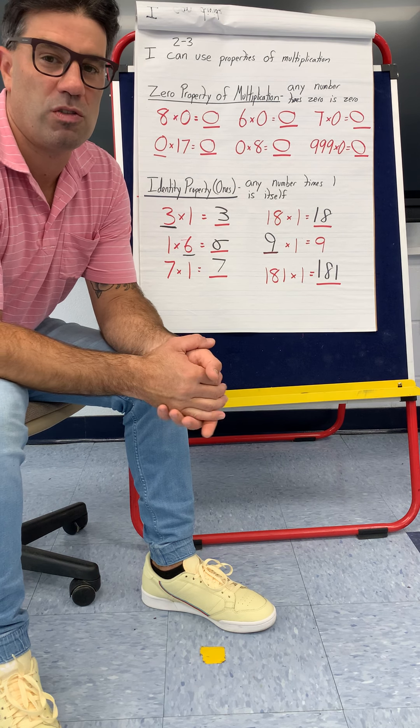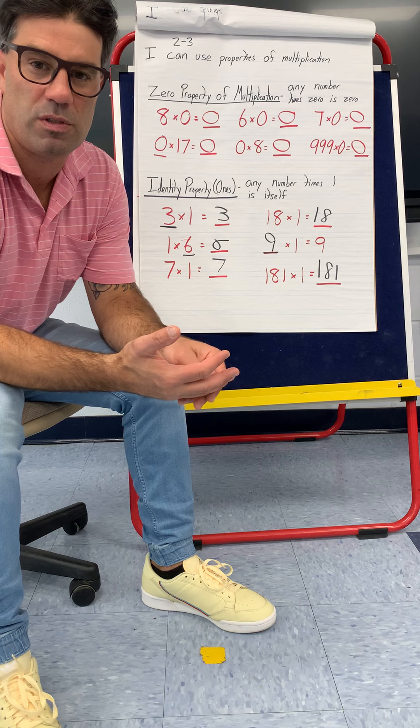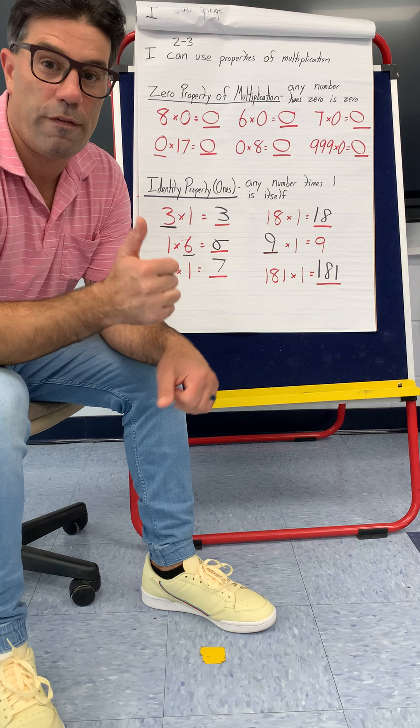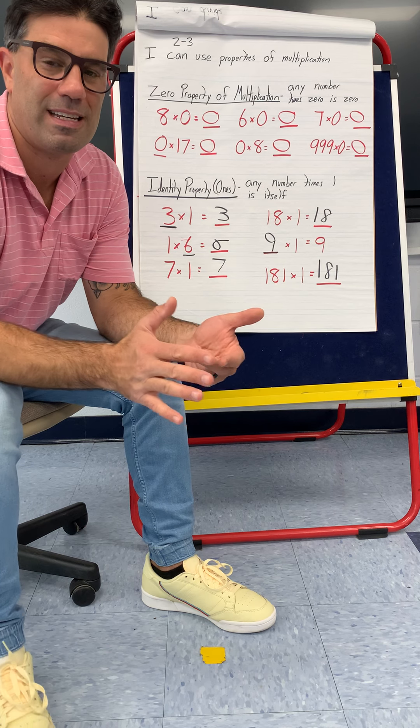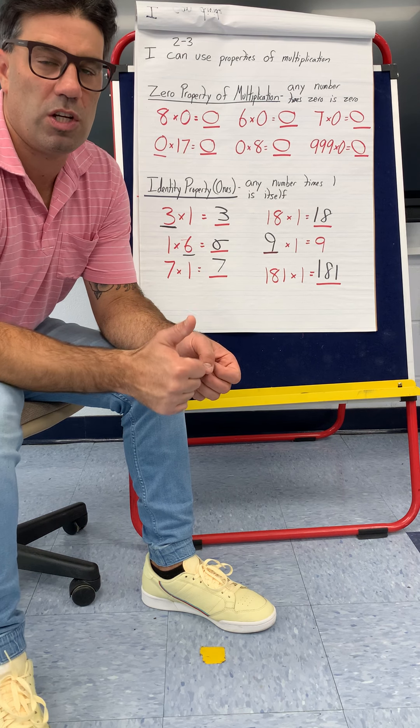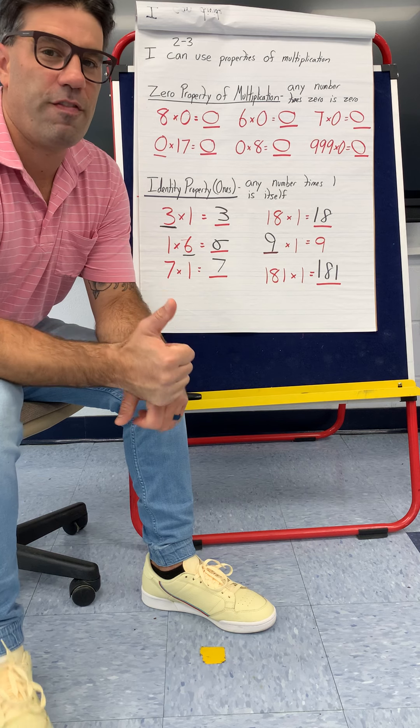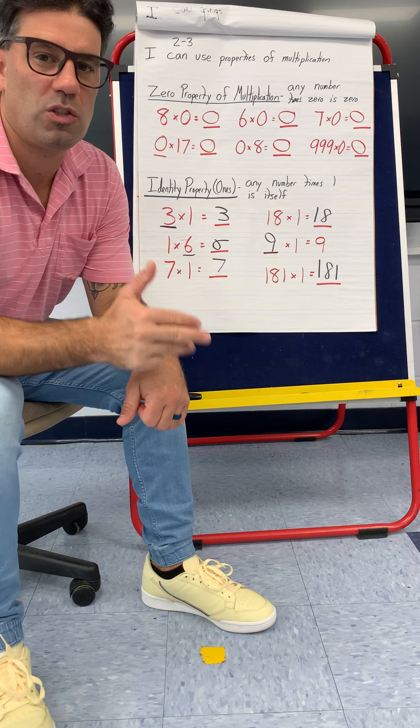By now you should be really solid by counting by those twos and fives. Count by twos to 24 with me: two, four, six, eight, ten, twelve, fourteen, sixteen, eighteen, twenty, twenty-two, twenty-four.